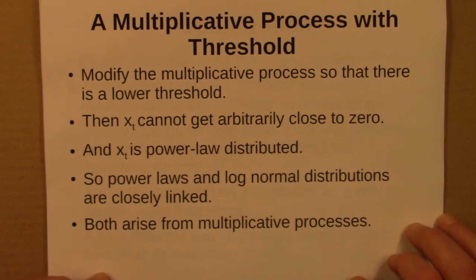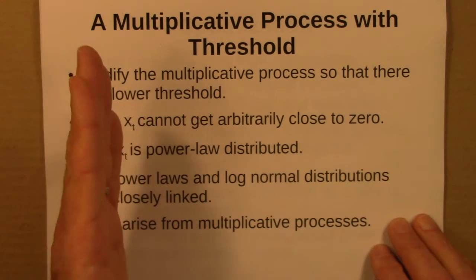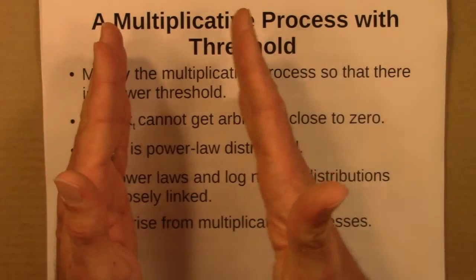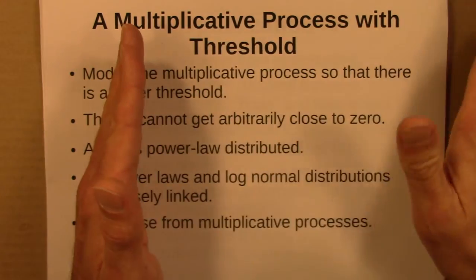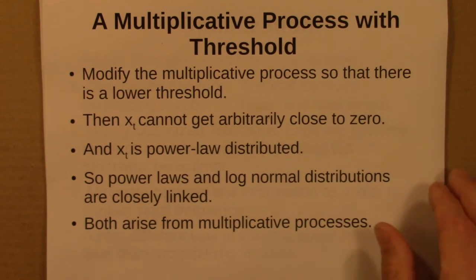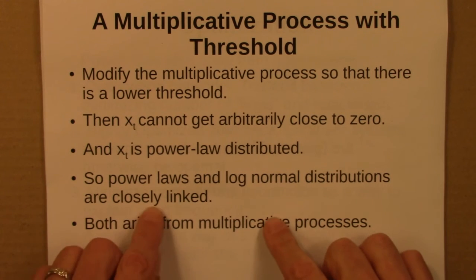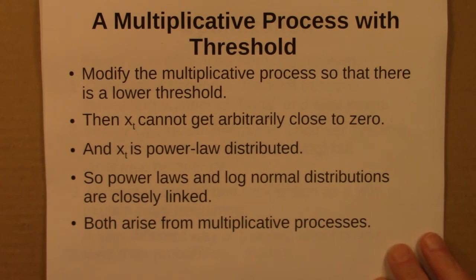However, if we add a lower threshold to this system so that x cannot get arbitrarily close to zero as we multiply again and again, that threshold — which x bounces off of — pushes the distribution out and gives it a long tail in power law form instead of log-normal. Power laws and log-normals are similar, both long-tailed, and can be mistaken for each other. They're closely linked not only because they look alike, but because they arise from very similar processes: a multiplicative process with a threshold turns a log-normal into a power law.